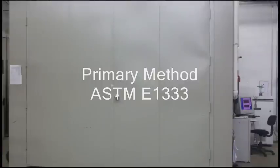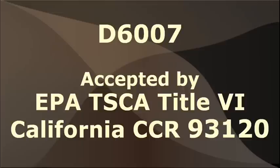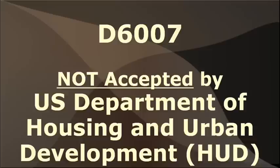ASTM D6007 can be used to determine compliance with formaldehyde emission limit requirements for CARB and the future EPA Toxic Control Substance Act, but not for HUD.